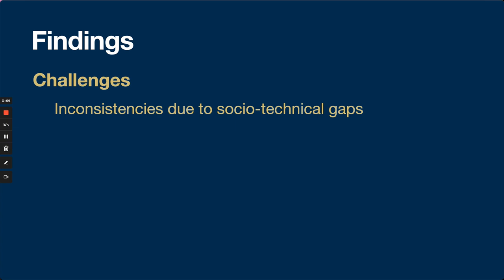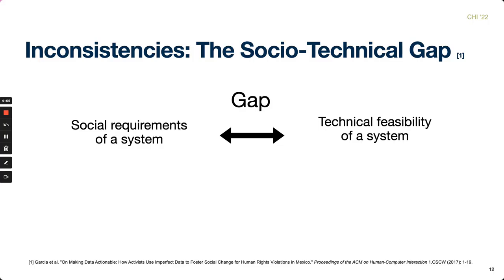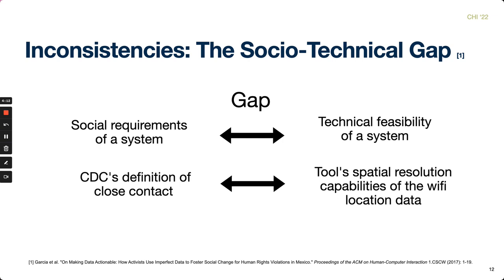As expected, we did observe some challenges that using the Wi-Fi data visualization in contact tracing introduced. The term 'sociotechnical gap' refers to the gap between the social requirements of a system and its technical feasibility. In our visualization, the gap between the CDC's definition of close contact and the tool's spatial resolution capabilities showed up as false positives and false negatives — meaning our system is limited to determining physical distance and can only say that two people were in proximity at a given time. It's possible for users to interpret these gaps as the system being incorrect or faulty, a perception that can harbor mistrust.